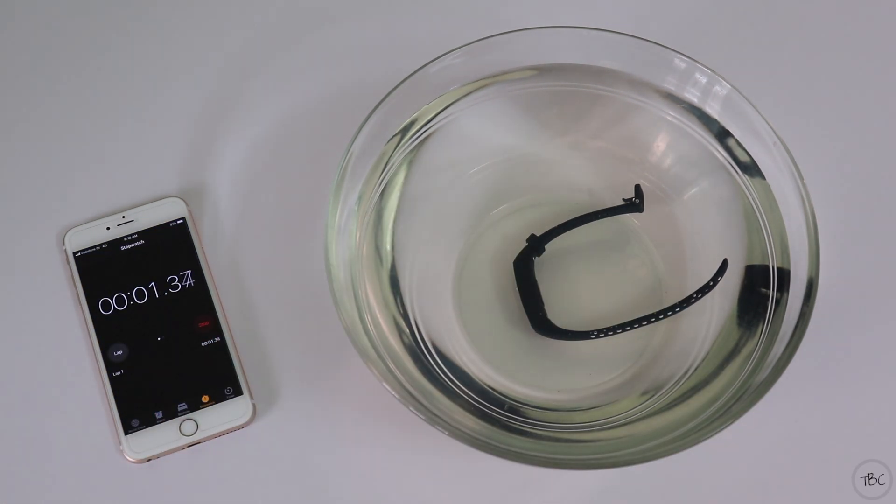Now for your reference, the water resistance in Honor Band 4 is up to 50 meters and it's rated under ISO standard 22810:2010, which means it has a water resistance rating of 5 atmospheres, or as Honor claims it can survive in 50 meters of water.